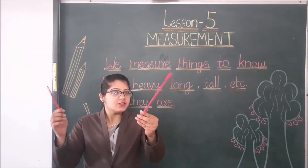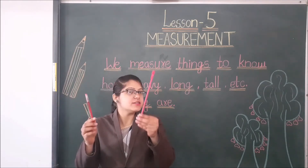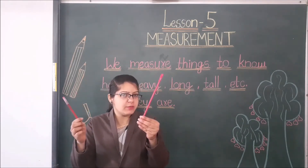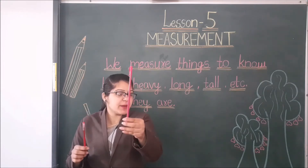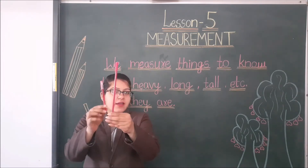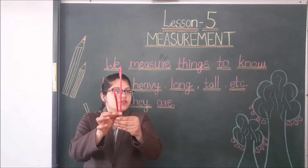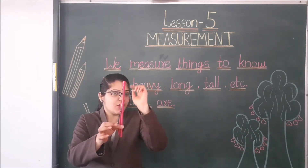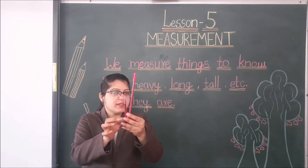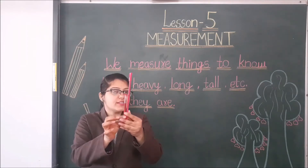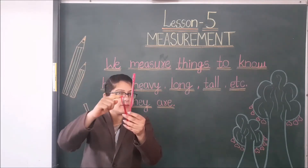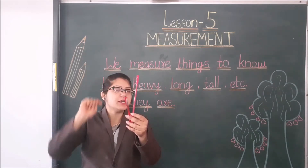Now students, here I have two pens. Tell me which pen is long and which pen is short. This is a pink pen and this is a red pen. So, which pen is long? This pink pen is long, and this red pen is short. So, we can say the pink pen is longer than the red pen, and this red pen is shorter than this pink pen.